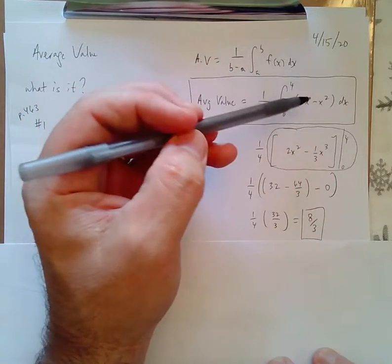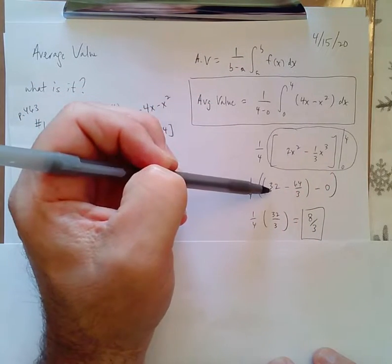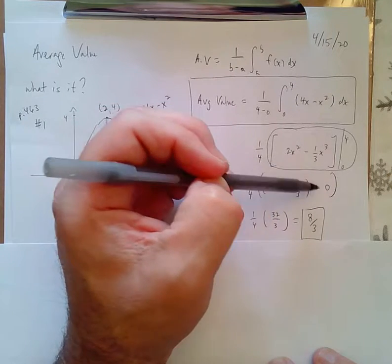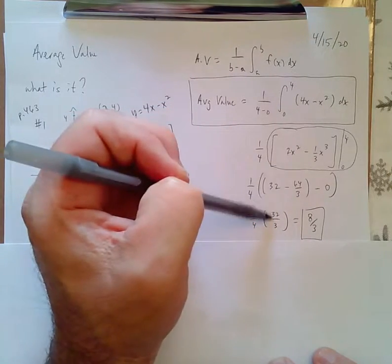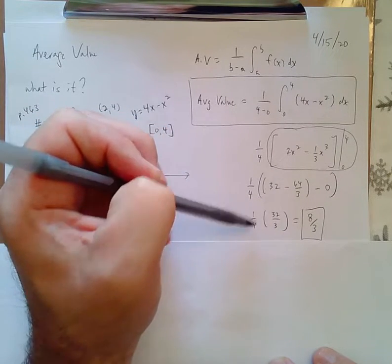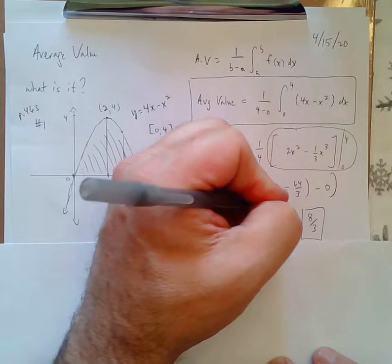If you want to practice this, put the 4 in here, and you're going to get 32 minus 64 thirds minus the 0. And if you work that out, you're going to get 32 thirds. Then you multiply the 1 fourth. And if you do that, you're going to get 8 thirds.